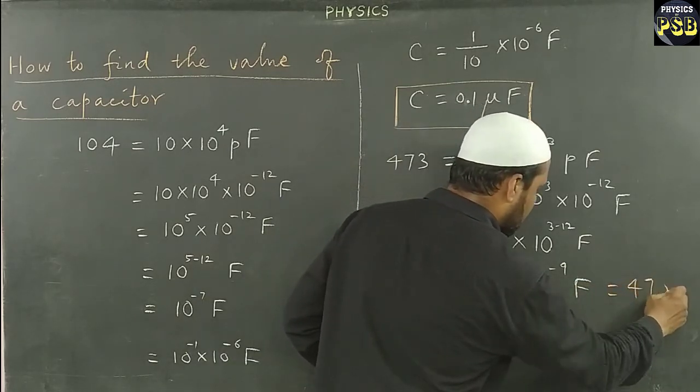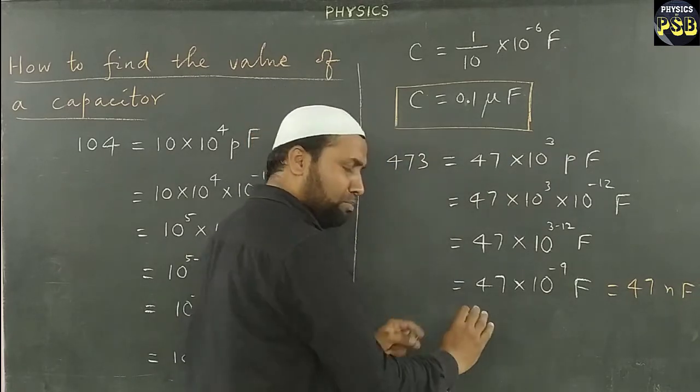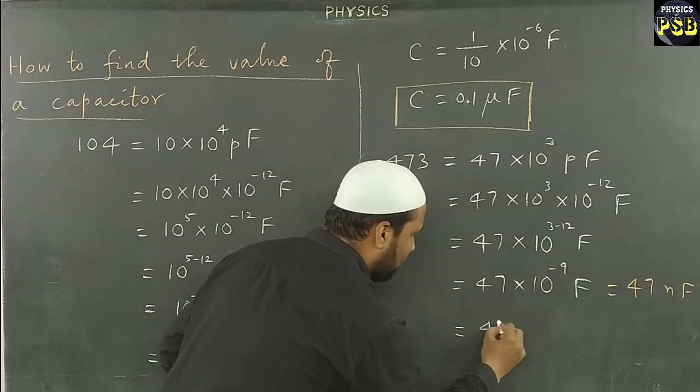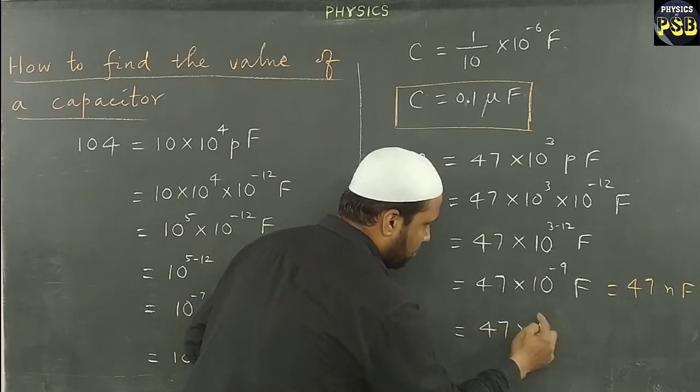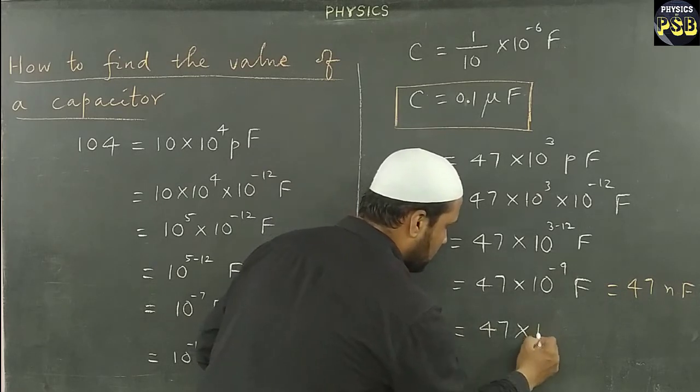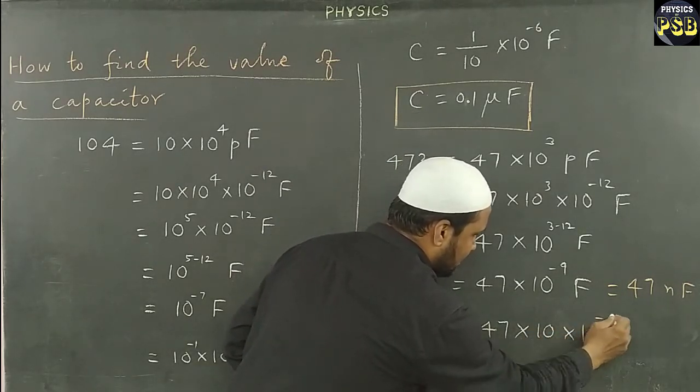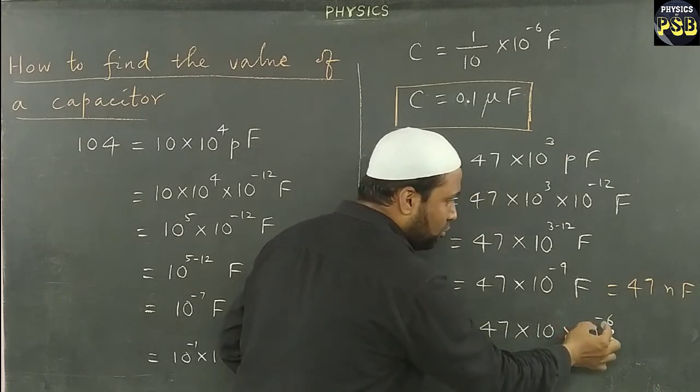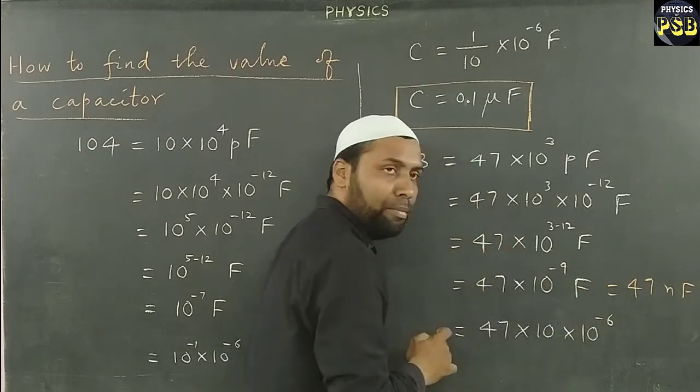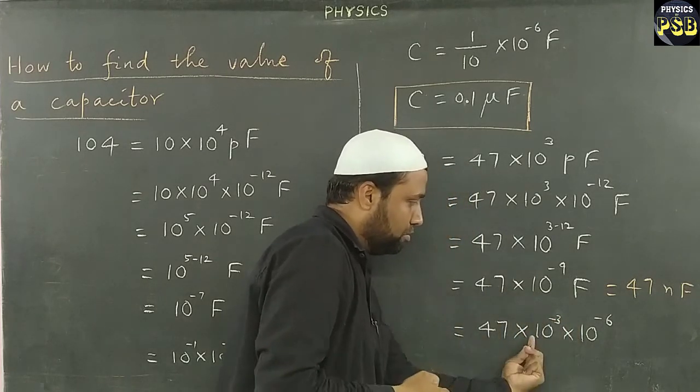Or if I want to write this in terms of microfarad, then I need to make certain changes. 47 × 10^-9, now I split this into 10^-6. I write it like this: 10^-6. When I remove 10^-6 from -9, I get -3 mentioned here.